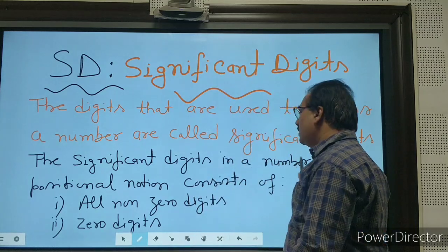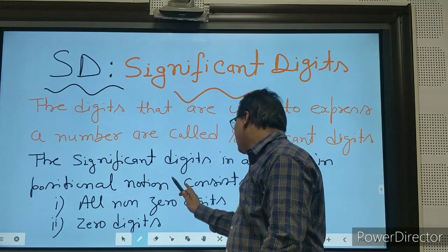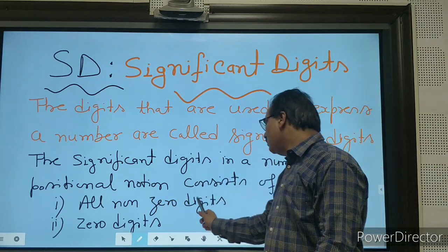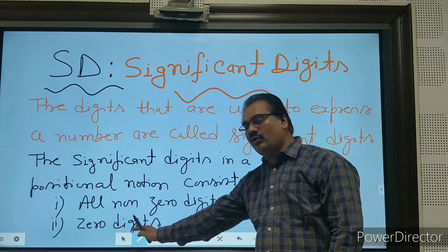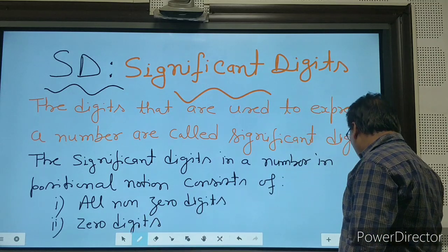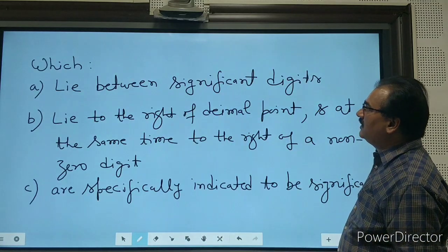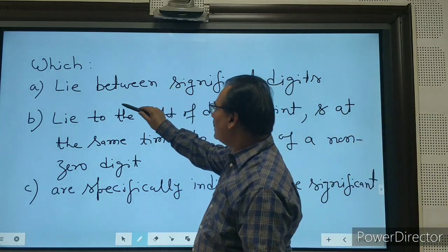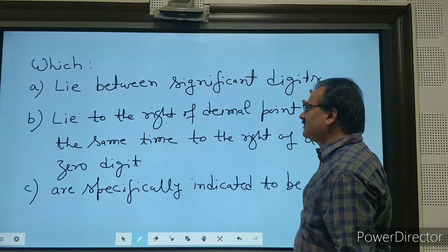The significant digits in a number in positional notation consist of all nonzero digits and zero digits—all nonzero and zero digits. Now you have to take care of these lines which lie between significant digits.